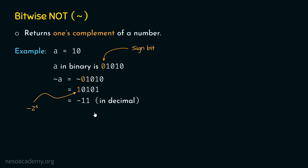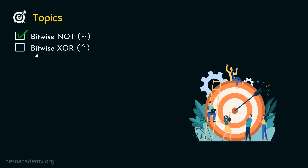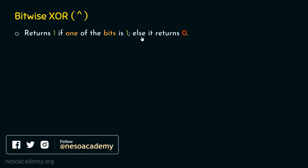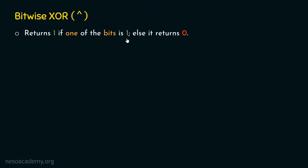Now let's move to the next topic: bitwise XOR, represented by the circumflex (^) symbol. The bitwise XOR operator returns 1 if exactly one of the bits is 1; otherwise it returns 0. It is not the case that when both bits are 1 we get 1 — we get 1 only when one of the bits is 1.